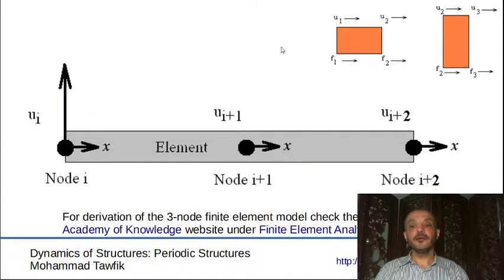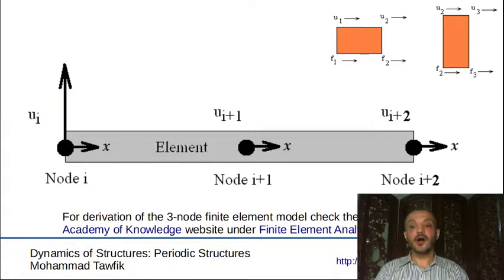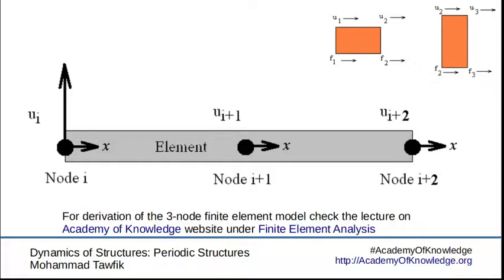Now, if we use the finite element model of a three-node bar — which, as its name shows, is a bar element that has three nodes in it — when we use two elements for the modeling of a cell, we will have five degrees of freedom. When we have five degrees of freedom, we are confident to a very good extent that the accuracy of the evaluation of the first two frequencies, at least, is accurate enough.